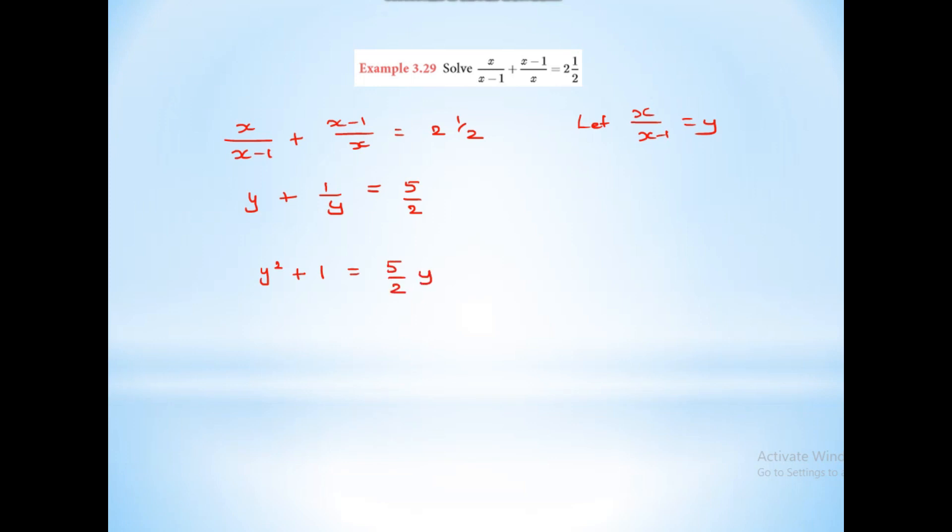Next sum: x divided by (x minus 1) plus (x minus 1) divided by x equal to 2 and 1 by 2. This is a fraction formula. Let x divided by (x minus 1) equal to y. Then y plus 1 by y equals 5 by 2, which gives 2y² minus 5y plus 2 equal to 0.